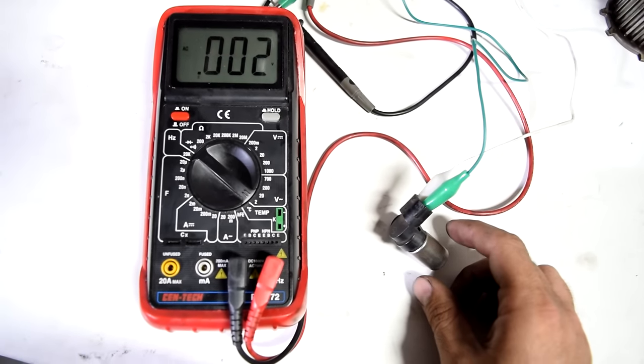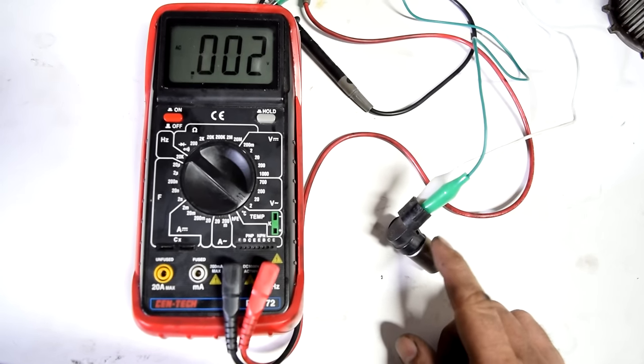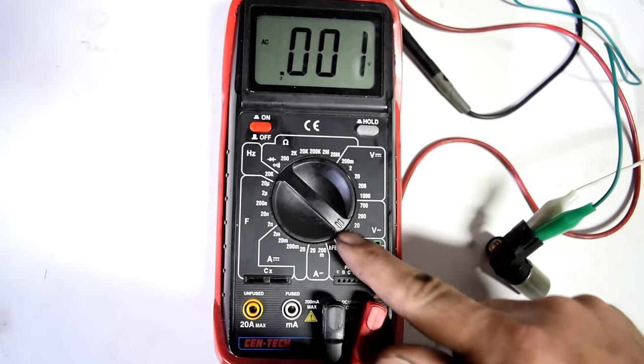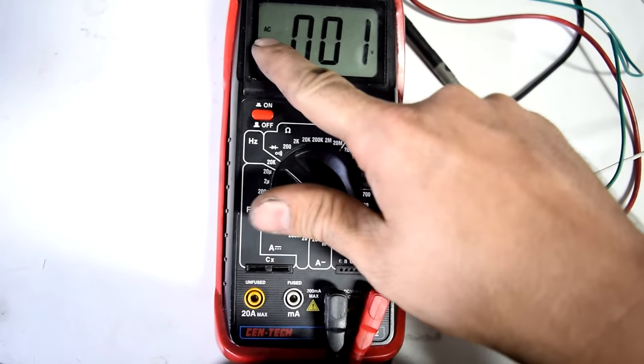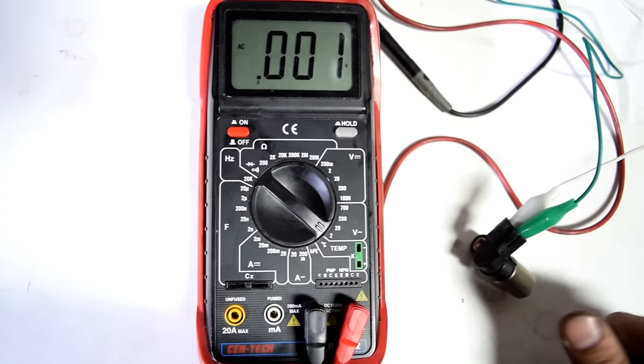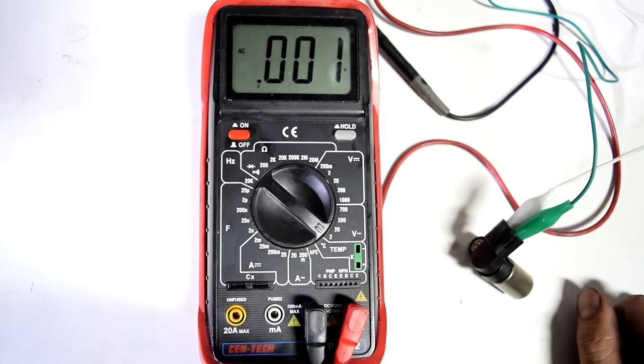And the last but most important test of all is to test whether this sensor can put out voltage. Again these sensors put out AC voltage so you want to get your multimeter and put it on AC volts. And we're going to go with 2 volts since most of these sensors only put out about 0.2 to almost 2 volts.